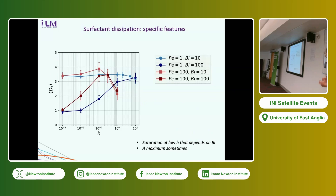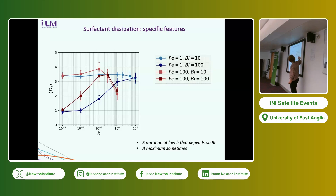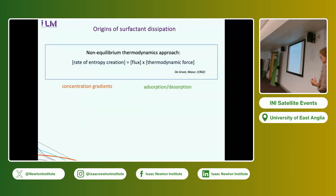We report the surface dissipation from numerical simulations for different parameters as a function of the adsorption length H. At large H we observe a saturation depending on the Biot number — large exchange gives small dissipation, smaller exchange gives higher dissipation. Sometimes there is a maximum. We want to understand the origins of this dissipation, so we switch from a mechanical point of view to a thermodynamical point of view.